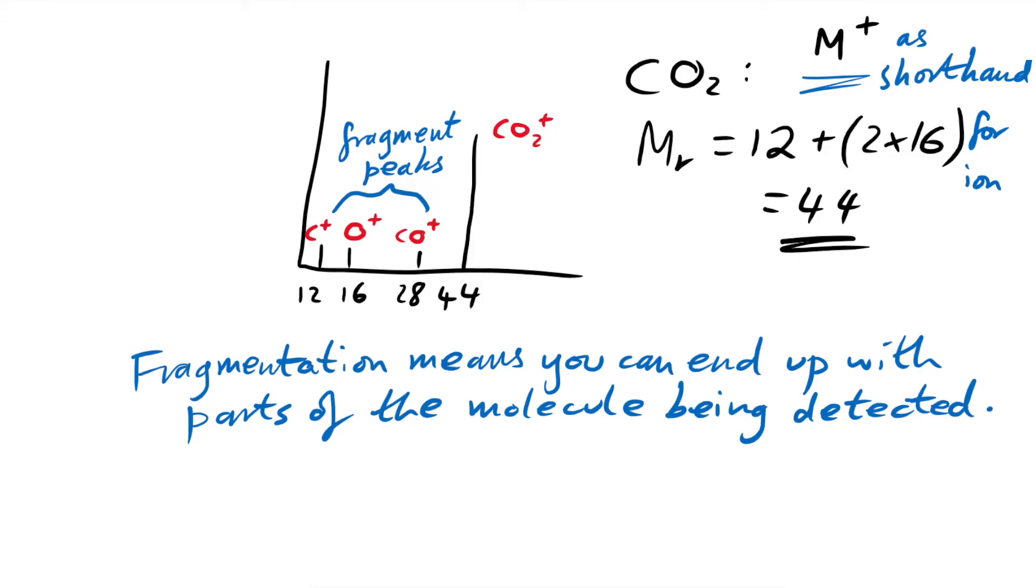So these fragments, they might not seem useful, but actually they are because it could be something else that adds up to 44, couldn't it? But we have 12, we have 16, whatever this molecule is that adds up to 44, it has a carbon and it has an oxygen in it. So this can be used to identify molecules. Isn't that clever?